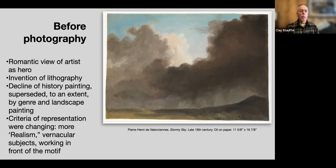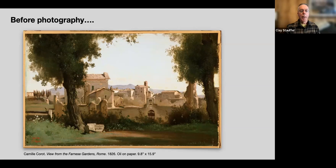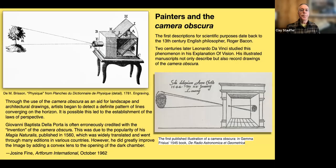Most importantly for our purposes, the criteria of representation were changing, as we'll see with Courbet and others. There was a type of realism — an attempt to capture an unpremeditated response to whatever was going on — moving toward more vernacular subjects and working in front of the motif. Here's something from the late 17th century by a French artist. This was all, in retrospect, almost preparing the world for photography. Here's one of Corot's paintings from his time in Italy — an informal motif, oil on paper, a small painting — indicating a real change in aesthetic standards.